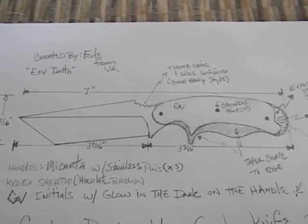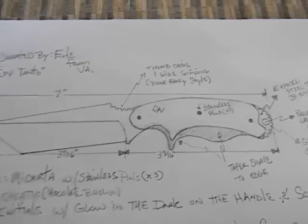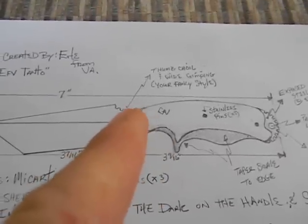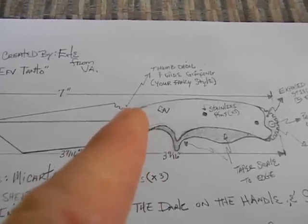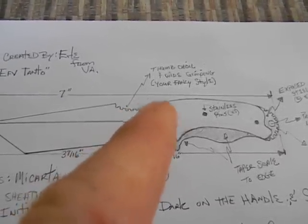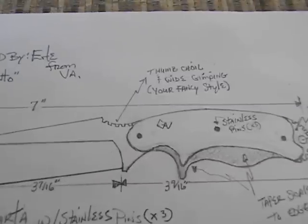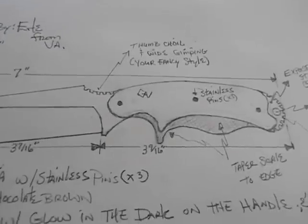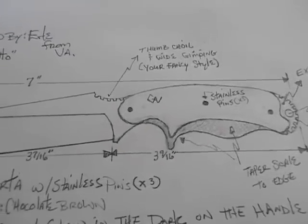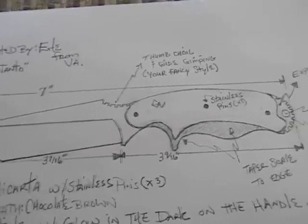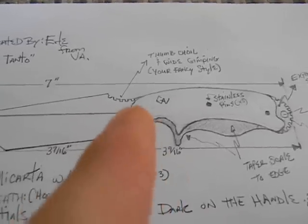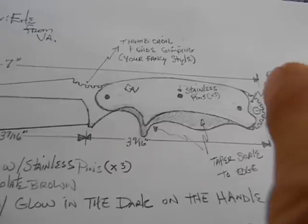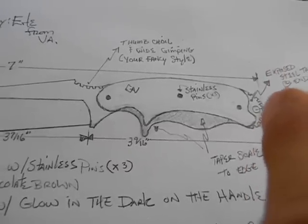I really like the Tonto type blade. I also got an area for the thumb choil using some of the jimping. Gavco you got what you call your fancy style jimping where you use the file and cut grooves in the side. I kind of like that style in the knives you used in the past. I like to have the jimping there and also on the rear end of the full tang.